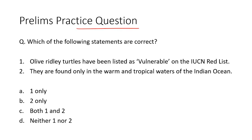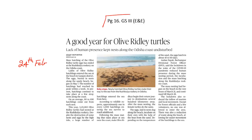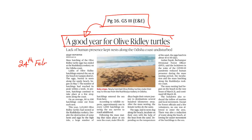Next practice question: Olive Ridley turtles have been listed as vulnerable on the IUCN Red List. They are found only in the warm and tropical waters of the Indian Ocean. The second statement is incorrect — Option A is the right answer. Olive Ridley turtles are found in warm and tropical waters, but not just in the Indian Ocean; they can also be found in the Pacific Ocean and the Atlantic Ocean. This question was asked because the mass hatching of Olive Ridley turtles has been completed for this season.